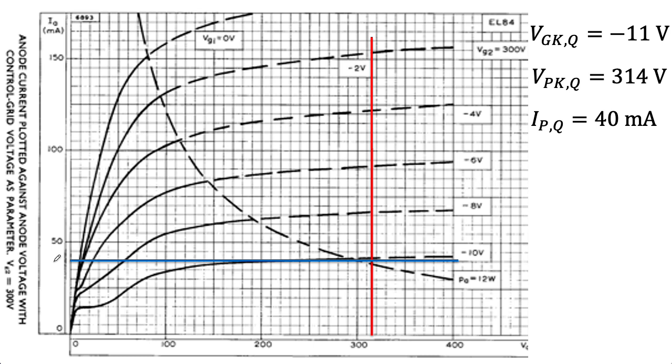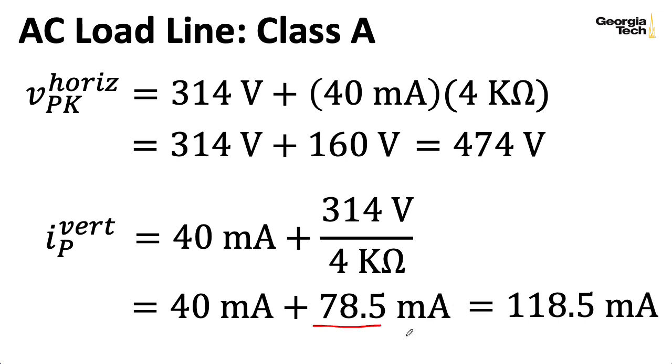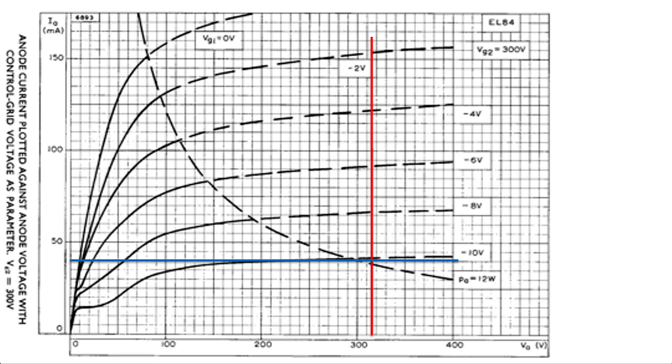So, now let me find a point on the vertical axis. I'm going to start at 40 milliamps. Now, I'm going to imagine that as I march 314 volts to the left, I'm going to climb up the vertical axis. So, I'm going to start at 40 milliamps, and I'm going to climb by 314 volts divided by 4 kilohms by Ohm's law. So, I'm going to climb 78.5 milliamps, giving me 118.5 milliamps. I'm being a little pedantic with my significant digits here, and drawing a point on the horizontal axis at 474 volts, and a point on the vertical axis at 118.5 milliamps.